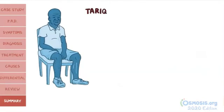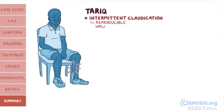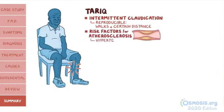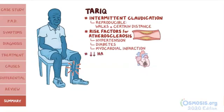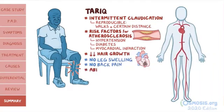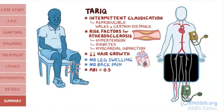Back to our case. Tariq is presenting with symptoms suggestive of intermittent vascular claudication. The pain is reproducible when he walks a certain distance, in his case, to the supermarket. Supporting the diagnosis, Tariq has risk factors for atherosclerosis like hypertension and diabetes, and also has a history of myocardial infarction. In addition, he has physical signs of peripheral artery disease like decreased hair growth. He also doesn't appear to have symptoms of the mimickers, with no leg swelling and no back pain. Tariq underwent an ABI test which showed a ratio of 0.5. CT angiography confirmed narrowing of his left femoral artery, which is consistent with the location of his pain in the calf.